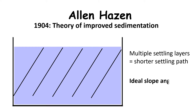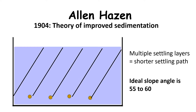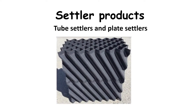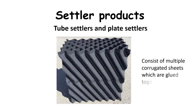The ideal angle of the surface layer is between 55 and 60 degrees. The surface layers are provided by tube settler or plate settler equipment. Tube settlers are usually made of PVC plastic and consist of multiple corrugated sheets which are glued together to form rectangular blocks with multiple channels.